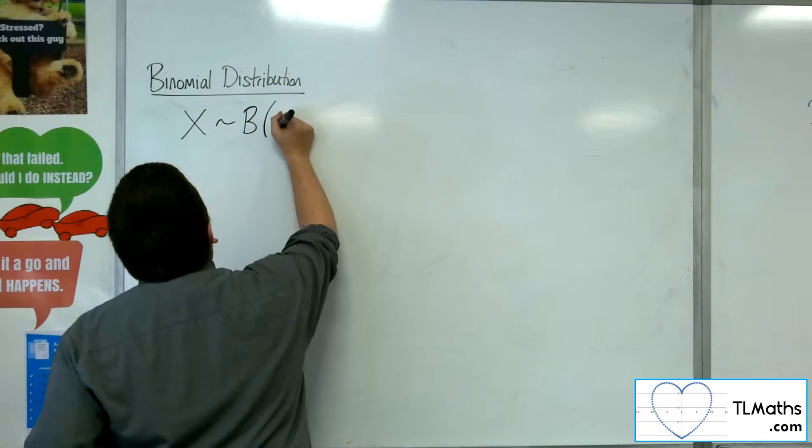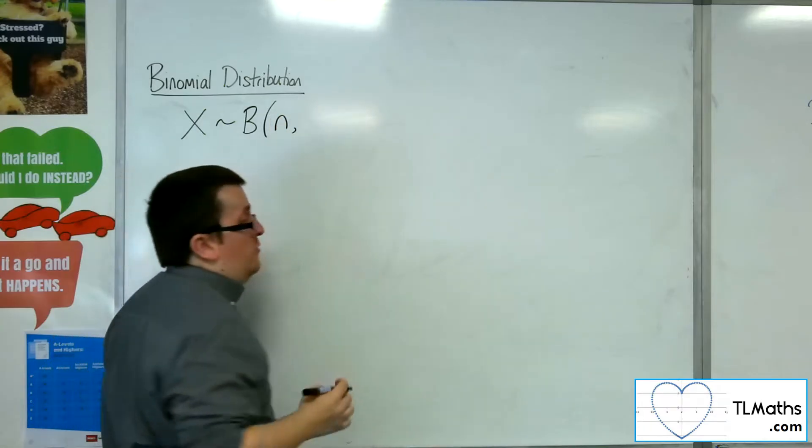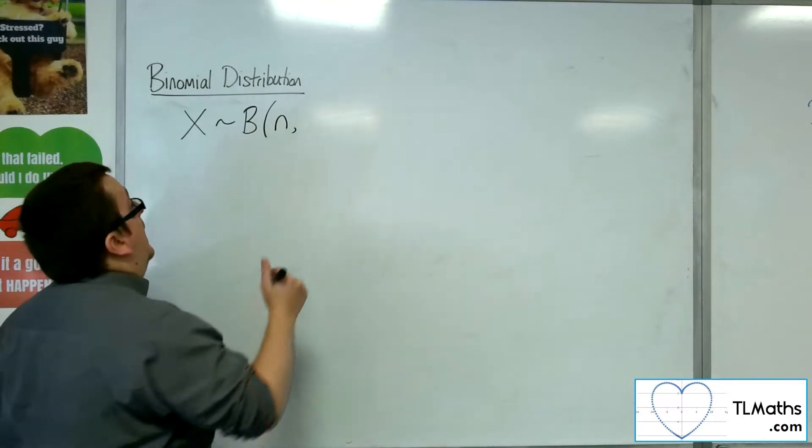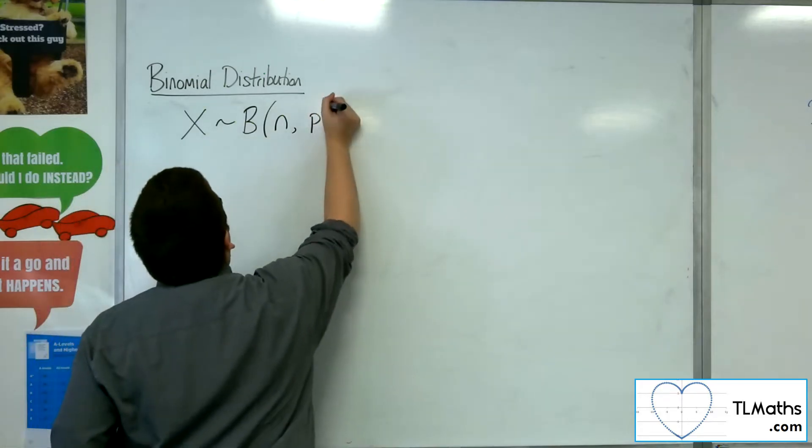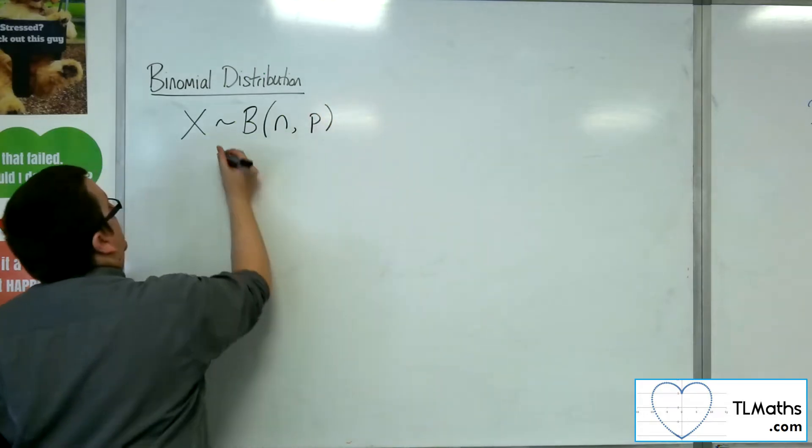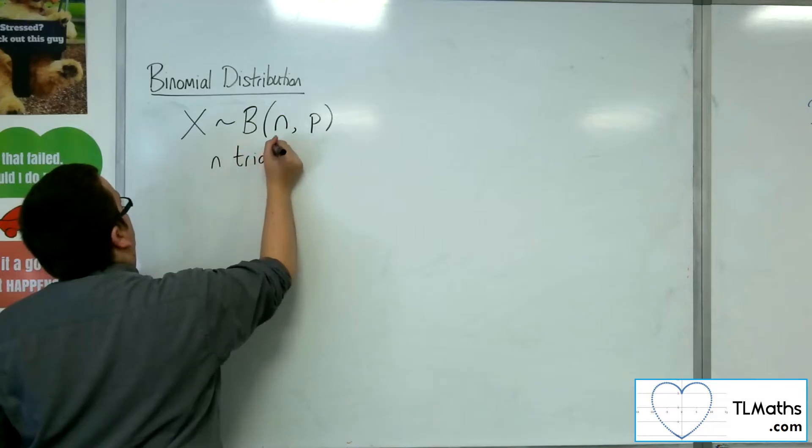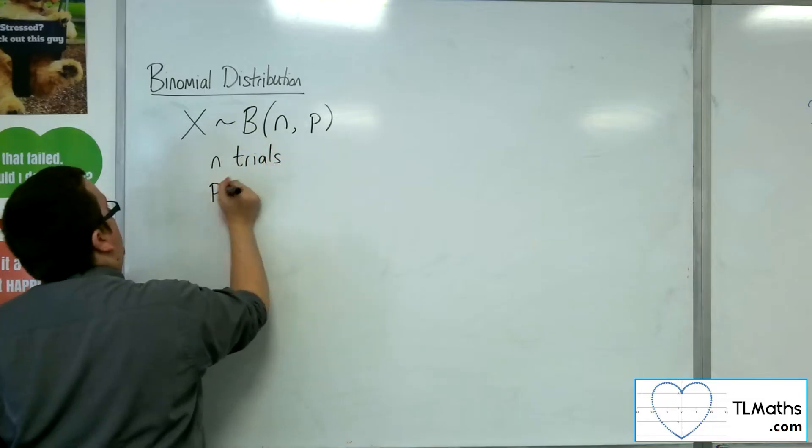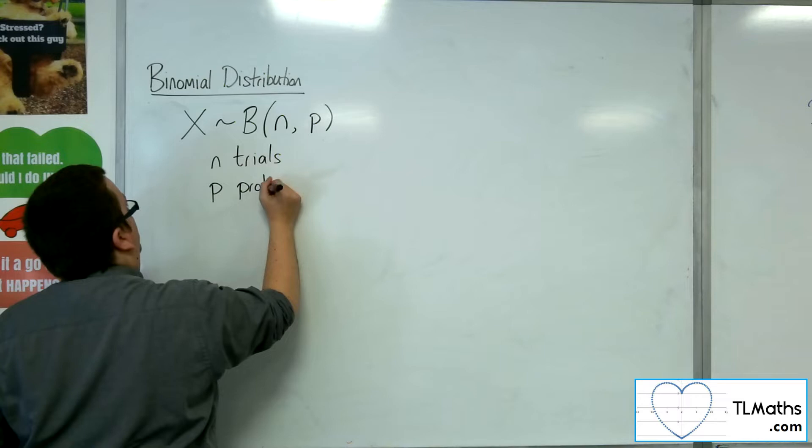It has a certain number of trials, a fixed number of trials, n, and a probability of success, p. So n trials, and p is the probability of success.